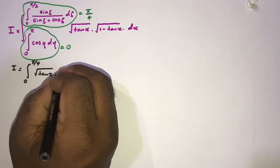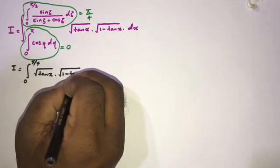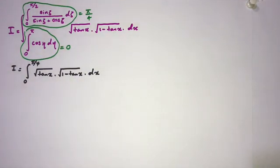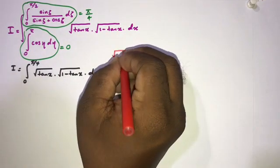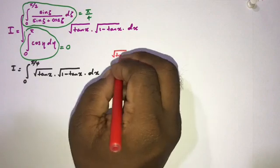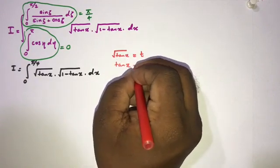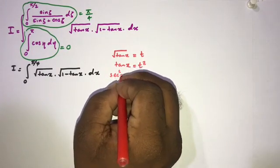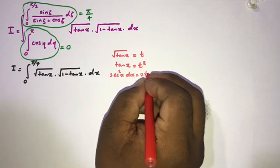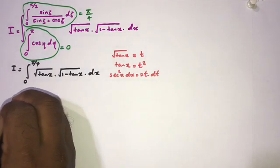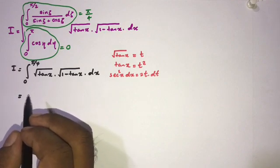Our integral becomes I equals the integral from 0 to π/4 of square root of tan(x) times (1 minus tan(x)) dx. Now we can take a substitution. If we let the square root of tan(x) equal t, then squaring both sides gives tan(x) equals t². Differentiating, secant squared of x dx equals 2t dt.